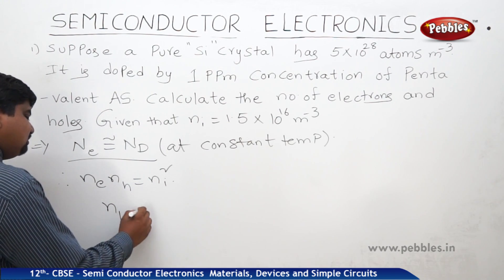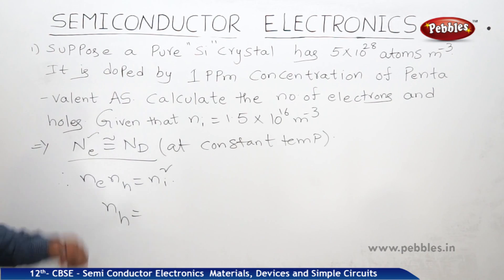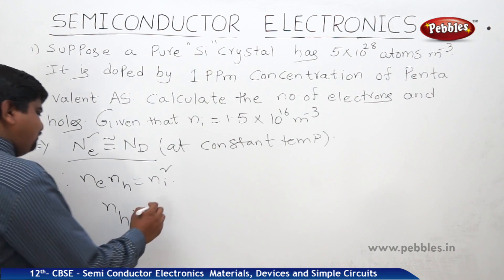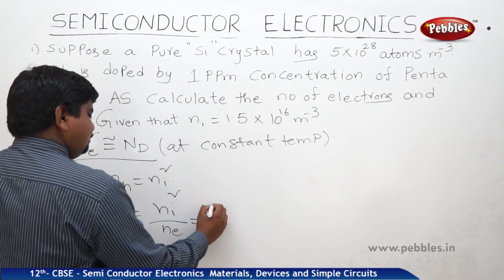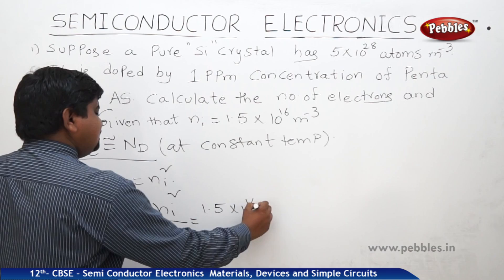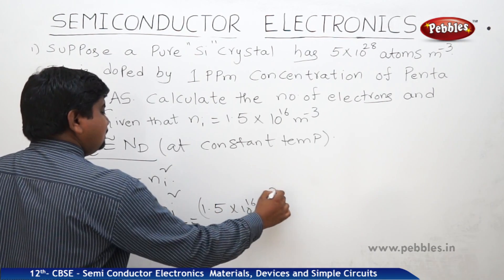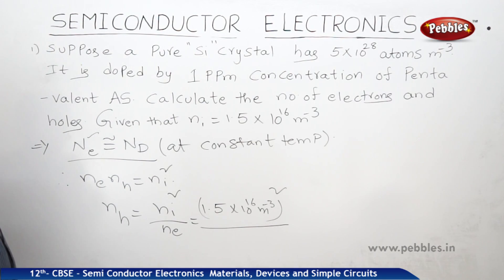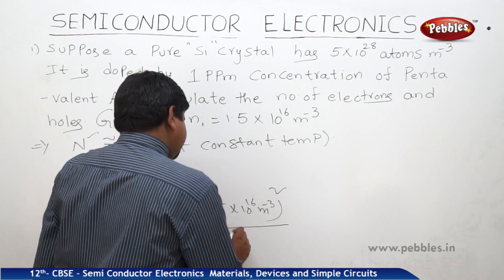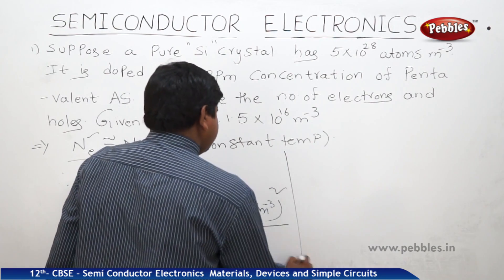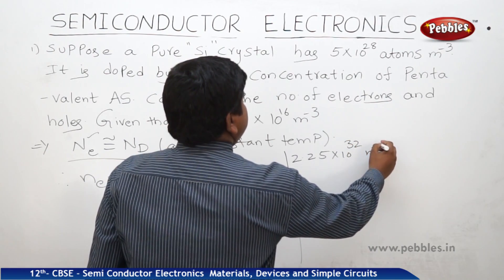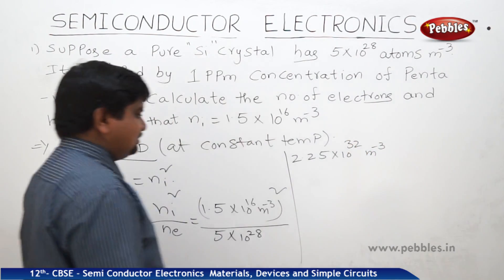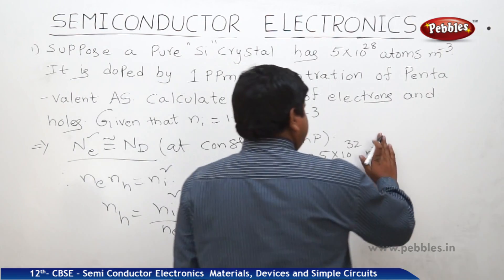We need to find the number of holes. The number of electrons equals 5×10²⁸ atoms per meter cube. So the number of holes is equal to Ni² divided by Ne. Ni is 1.5×10¹⁶ m⁻³, whole squared, divided by Ne which is 5×10²⁸. This gives 2.25×10³² m⁻⁶, because minus 3 squared gives minus 6.